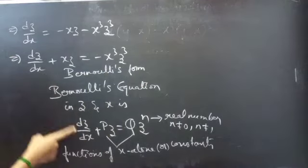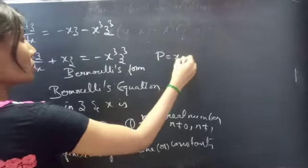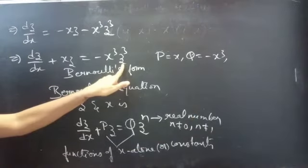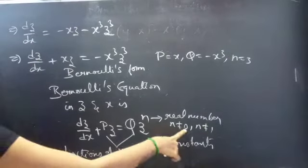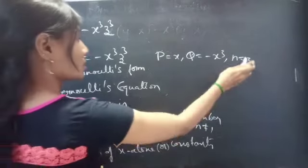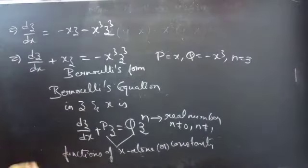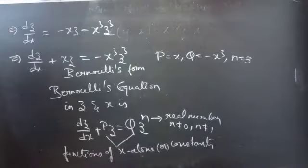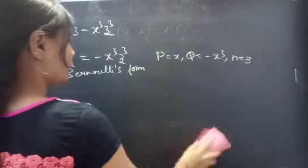By comparing these two equations, we can say that we have reduced the given equation to Bernoulli's form. Comparing gives p equals x, q equals -x³. Comparing z³ with zⁿ gives n equals 3, which is neither 0 nor 1 and is a real number. Here p and q are functions of x alone.